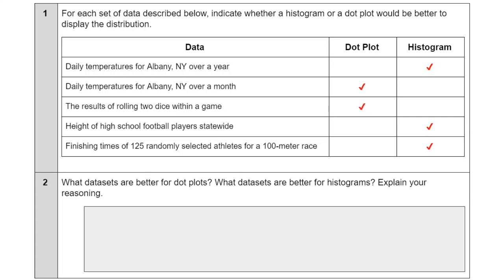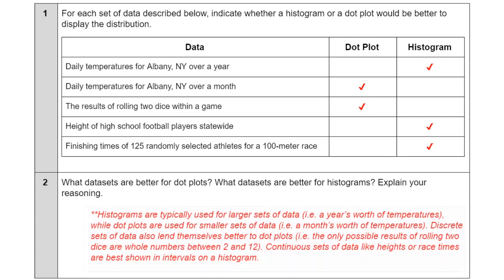So what data sets are better for dot plots and what data sets are better for histograms? Explain your reasoning. Histograms are better for bigger sets of data and continuous pieces of data like heights or time, any sort of time keeping thing. And then dot plots are better for smaller sets of data and things that are more countable, so the number of people that like chocolate ice cream, vanilla ice cream, and strawberry ice cream, things like that.